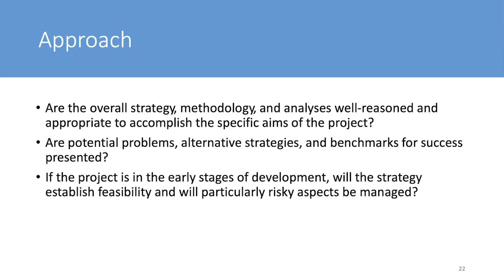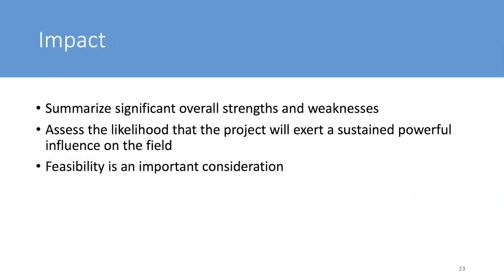You do have a section in the grant proposal called innovation. Most people are swayed by the significance section, methodology, and the aims. The impact score — the final score you get — basically summarizes the overall strengths and weaknesses and speaks to the feasibility of your proposal to actually address the aims and make an impact on the field. It's not an average of all the scores; sometimes you'll see that somebody emphasized one area over another in their impact score, and we're told it's not an average.